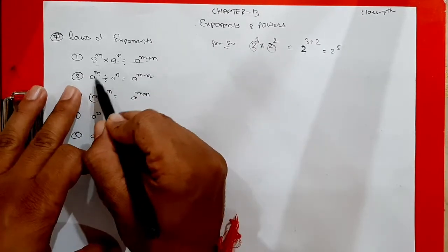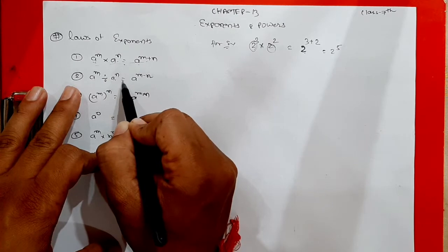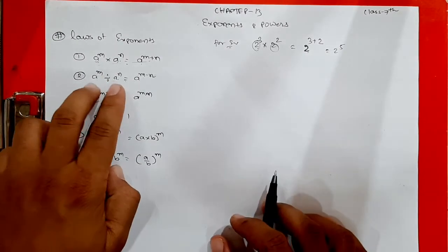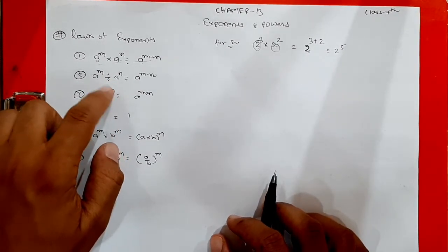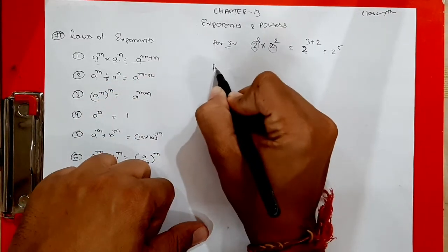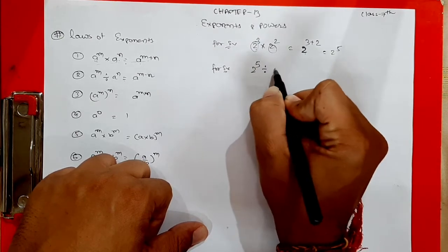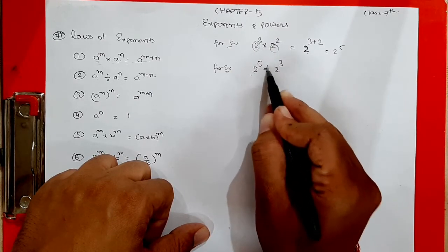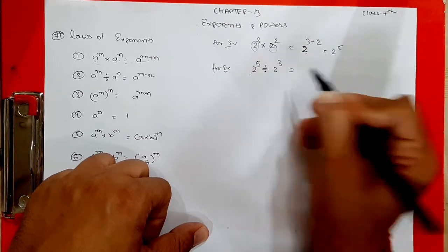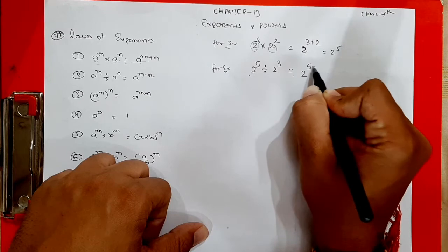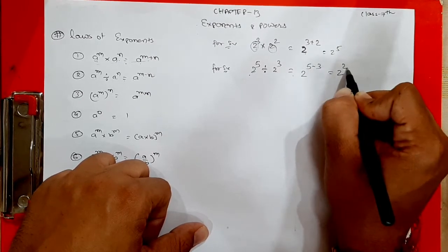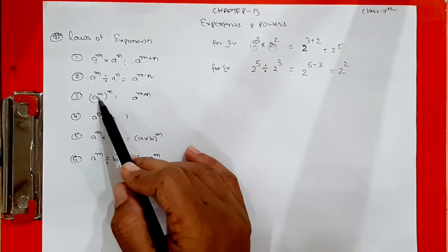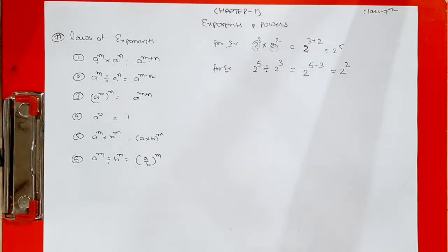The second rule is: a raised to m divided by a raised to n is equal to a raised to m minus n. If both bases are the same and there is a division sign in between, the powers get subtracted. For example, 2 raised to 5 divided by 2 raised to 3 — both have the same base, division sign in between — so we write the base once and subtract the powers: 2 raised to 2.